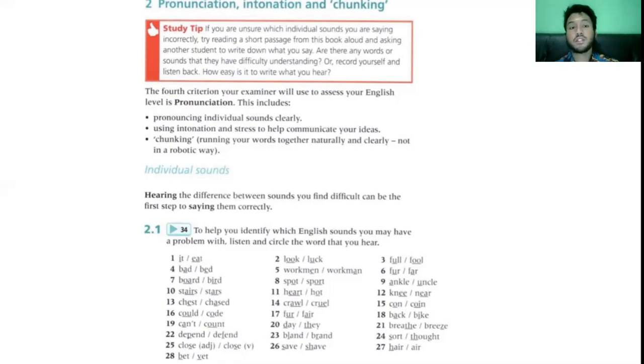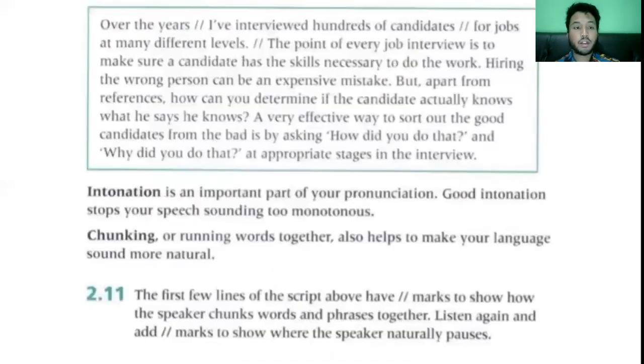It's way different from look. Here's fur and far. Fur is the hair on an animal's body, and far is distant. Back and bike. Back is your back, and bike is a bicycle. Shave and save. Save is to save something, and shave is to cut hair off your body. And obviously, here and air. Here being here, and air being air that we breathe.